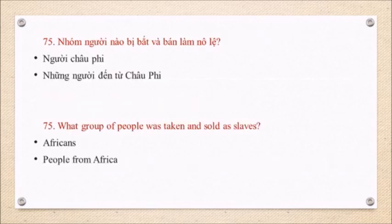Question 75: What group of people was taken and sold as slaves? Africans. People from Africa.